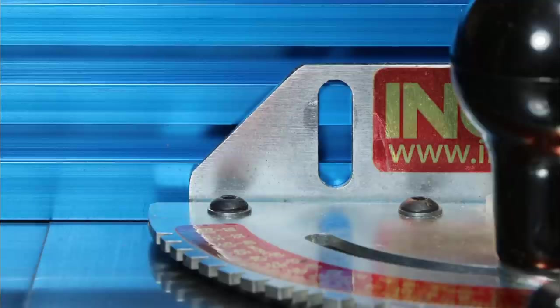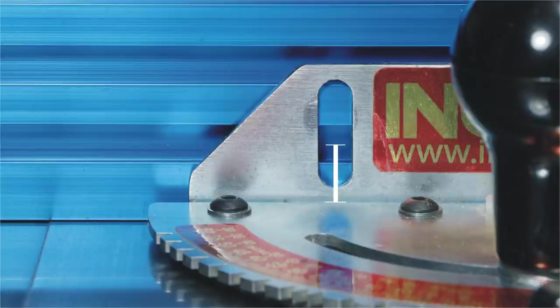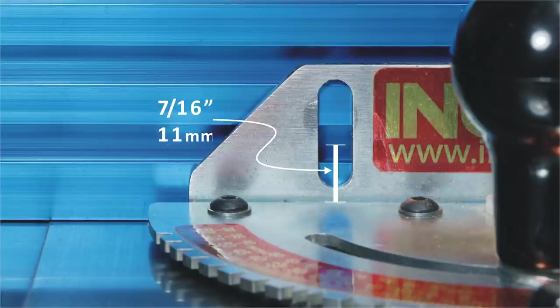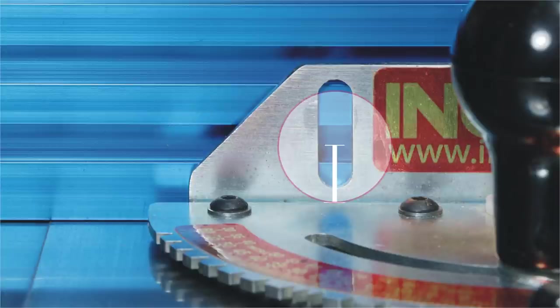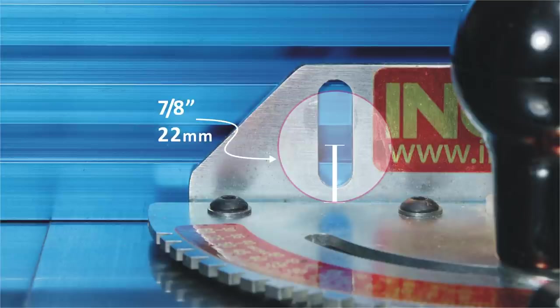First, I measured the problem. The distance from the center of the slot to the base of the jig was just a hair over 7 sixteenths of an inch, or 11 millimeters. This is the turning radius. That means the diameter of my new knobs had to be no larger than 7 eighths of an inch, or 22 millimeters.